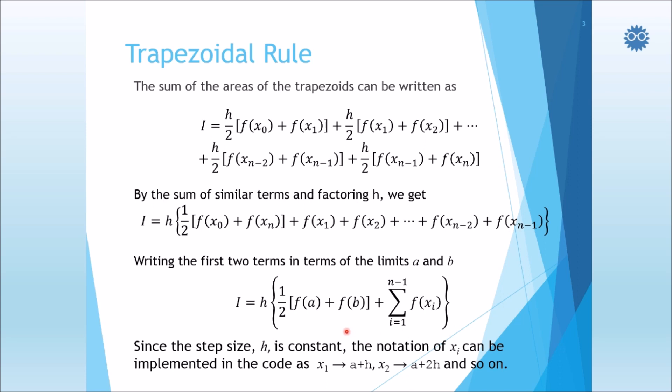Now we have subscripted variables, but in coding we don't have to use arrays because we can express each integration point in terms of the lower limit of integration plus the step size, or the step sizes of the trapezoids up to that point.